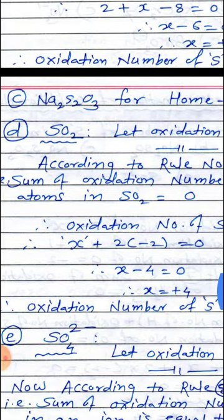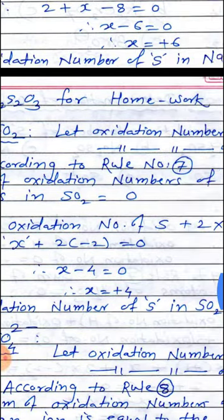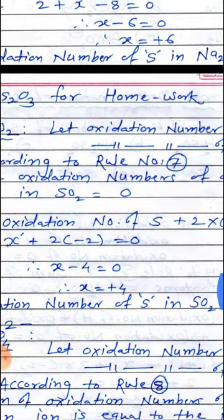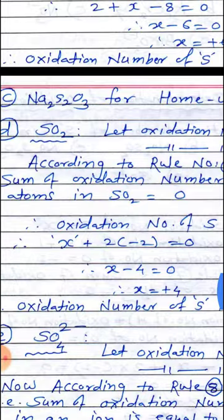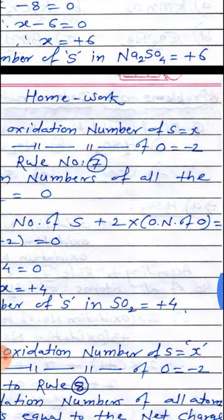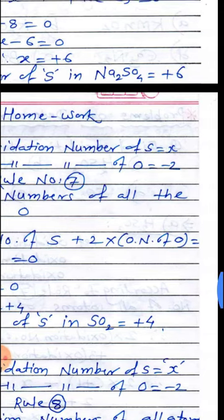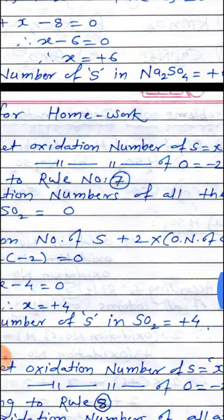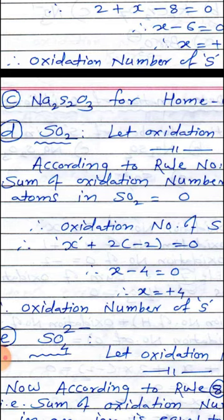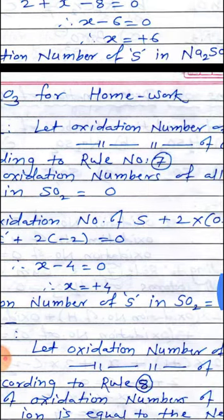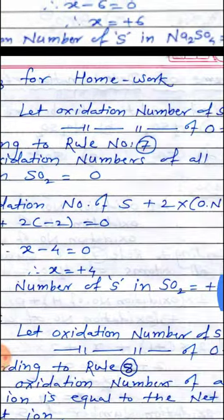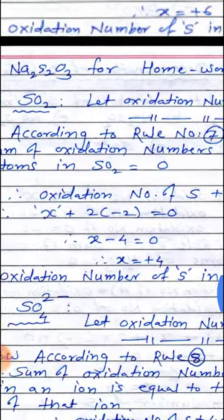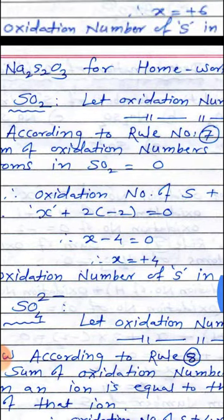Next, D: SO₂, sulfur dioxide. We have to determine the oxidation number of sulfur in SO₂. Let the oxidation number of sulfur equal to x. The oxidation number of oxygen equals minus 2. SO₂ is a neutral molecule. Hence, according to rule number 7, the sum of oxidation numbers of all the atoms in SO₂ equals 0.